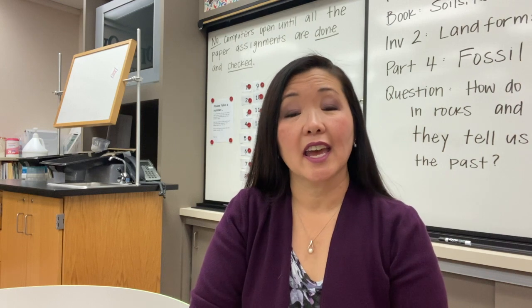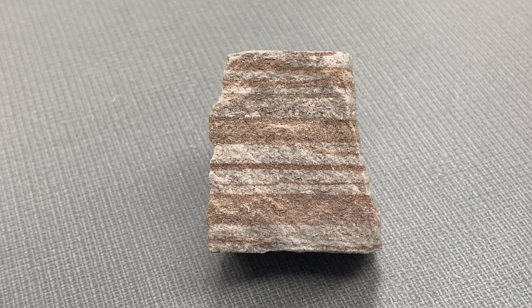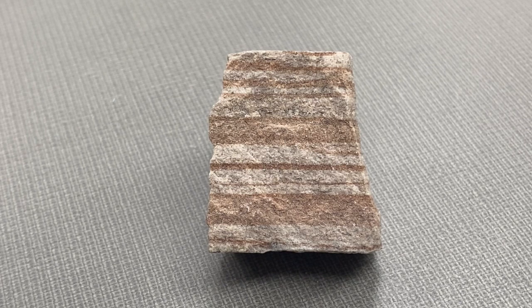Lithos is a Greek root word for rock, and fication is a Latin root word for making or causing. The rock that is made is a sedimentary rock called banded sandstone. Sedimentary means that it was made from sediment. It's called banded because you can see stripes or bands in it, and it is called sandstone because it is made of compacted or lithified sand.